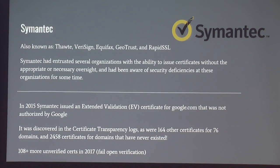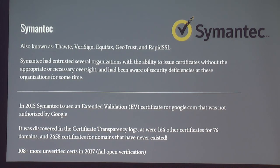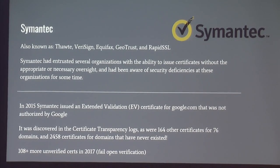A more recent example is Symantec, also known as Thawte, Verisign, Equifax, Geotrust, and RapidSSL — they resell under various different names. When they do these resells, they trust other organizations to sign certificates on their behalf, and some of those organizations didn't have very good security practices. Symantec didn't verify they were doing what they were supposed to. In 2015, Symantec issued an extended validation certificate for Google.com that Google did not authorize. This was discovered in the certificate transparency logs. Also, 164 other certificates for 76 domains were found, and over 2,000 certificates were issued for domain names that had never even existed. In 2017, 108 more unverified certs were found. Symantec had a problem where if you requested a certificate for a domain name that didn't exist, it would fail open and issue it to you, and then you could get the domain name afterwards. That has since been fixed.